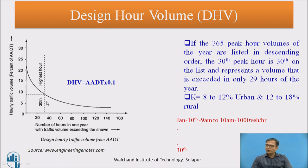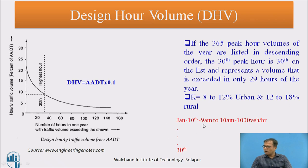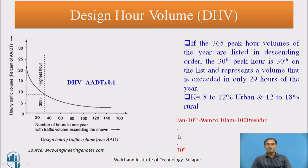Why the 30th hour? If we take the hourly volumes for the year and arrange them in descending order, the 30th value is the 30th highest hourly volume. This represents the volume exceeded in only 29 hours of the year — meaning traffic exceeds this value only 29 hours per year; the rest of the hourly volumes are less. If we take the 10th hourly volume, it is exceeded only 9 times a year, but providing that facility would be uneconomical.